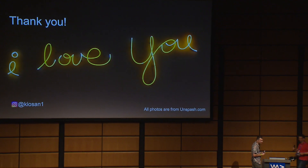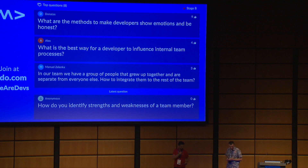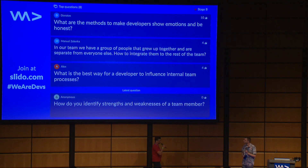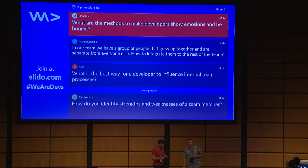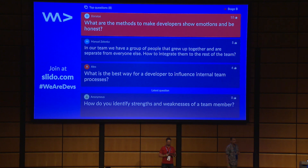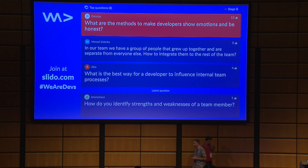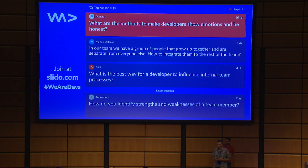Thank you. [Moderator]: Thank you, Alexander. As expected, there are some questions. The first and highest-rated one is: what is the best method to make developers show emotions and be honest? [Speaker]: To show emotions, we have to talk. The very simple way is just to have frequent one-to-one meetings — nothing new or special. In those conversations, ask questions that don't always relate to work, and try to find what's interesting for those people. The easy answer is just to talk one-to-one, frequently.